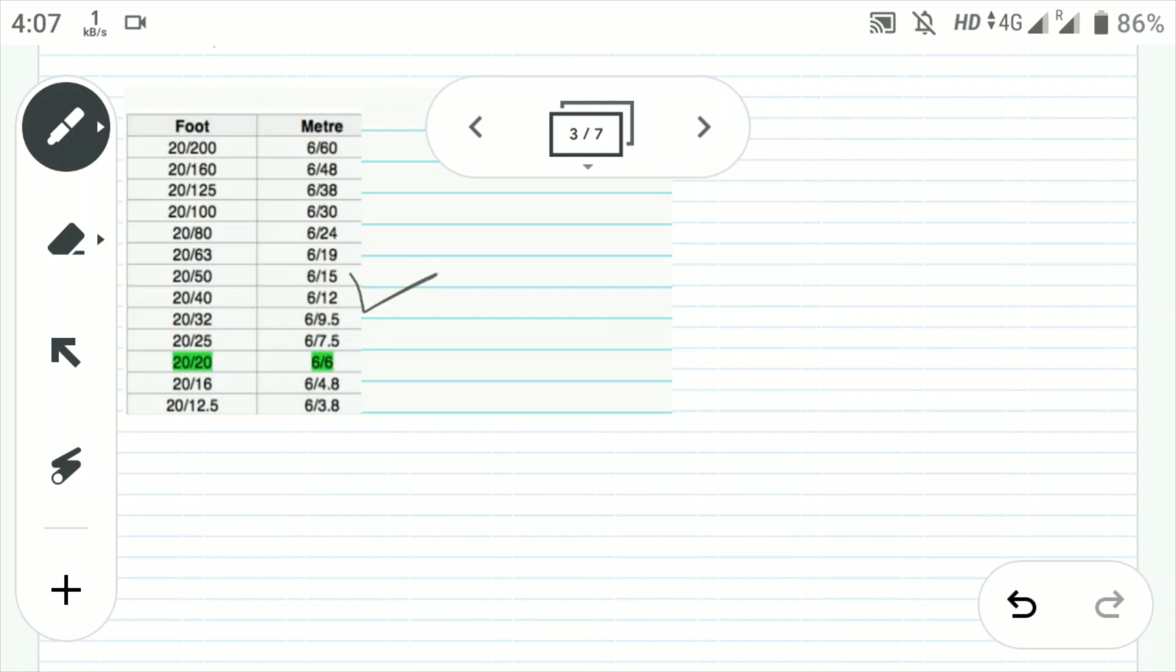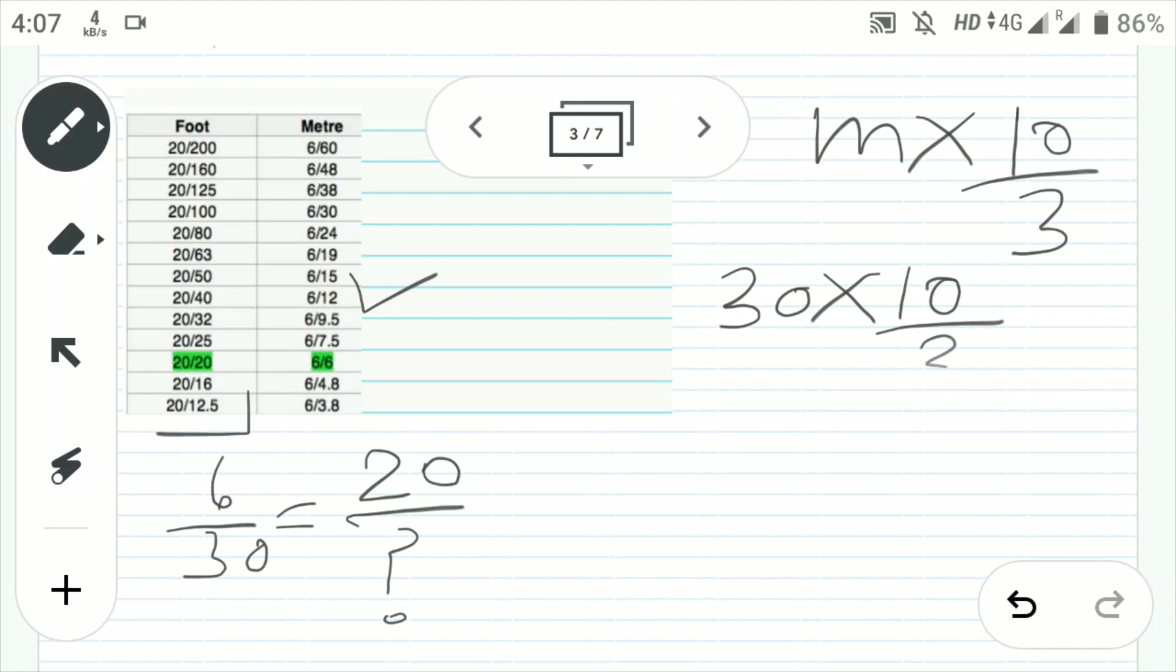So let's check for the examples. So here this one is given in meters and this is given in foot. Let's take an example. Let's solve 6 by 30. 6 you already know is 20. We don't know what 30 is. We have to calculate 30. So you have to multiply 30 with 10 by 3. So this will become 10 and this will fetch you 100. That means 6 by 30 is equal to 20 by 100. So let's check. See? We got the correct answer.